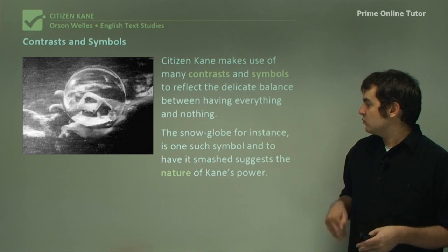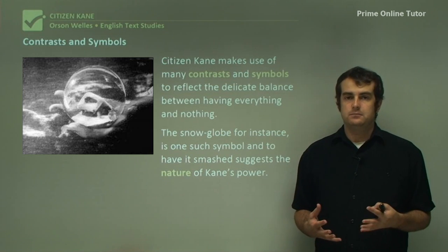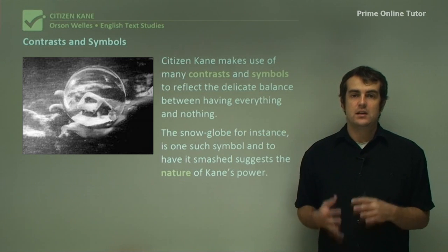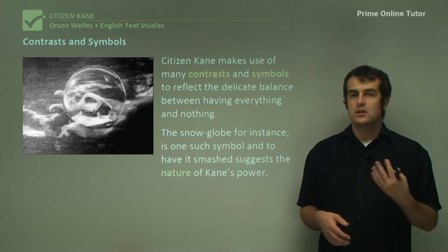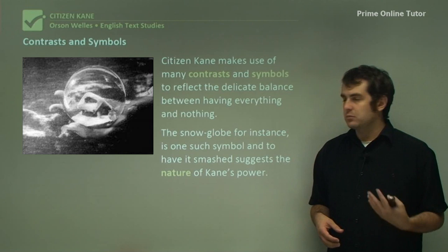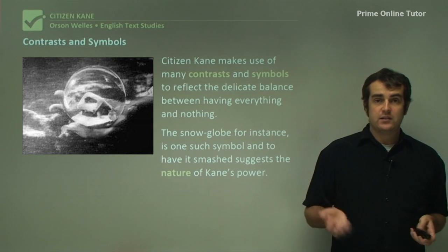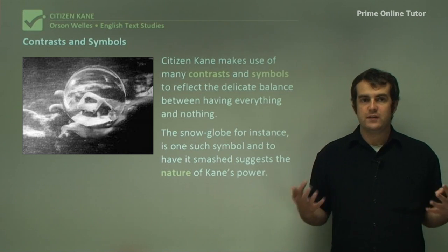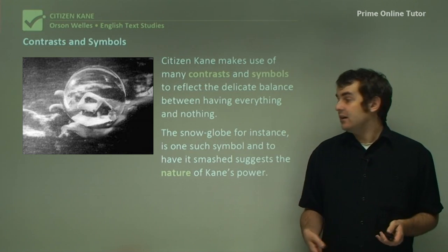The snow globe is one such symbol — having it smashed suggests the nature of Kane's power. He has all this power, and yet he has the world in his hand and smashes it because he is miserable. He can't control everything, and having this device at the beginning of the film indicates that his world is collapsing on itself, mostly because of him.